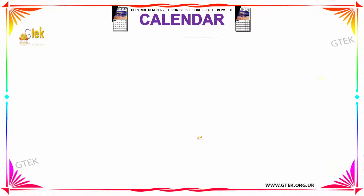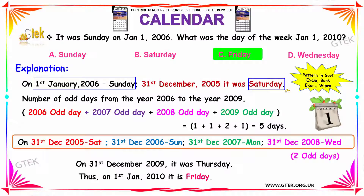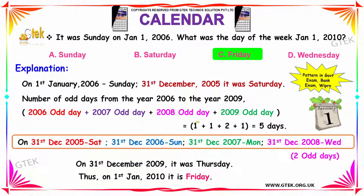Since Jan 1st 2006 is Sunday, the previous day — Dec 31st 2005 — would have been Saturday. Now we calculate the number of odd days from 2006 to 2009. Since 2006 is an ordinary year, we have one odd day. 2007 is also an ordinary year, hence one odd day. 2008 is a leap year, hence two odd days. 2009 is an ordinary year, hence one odd day.